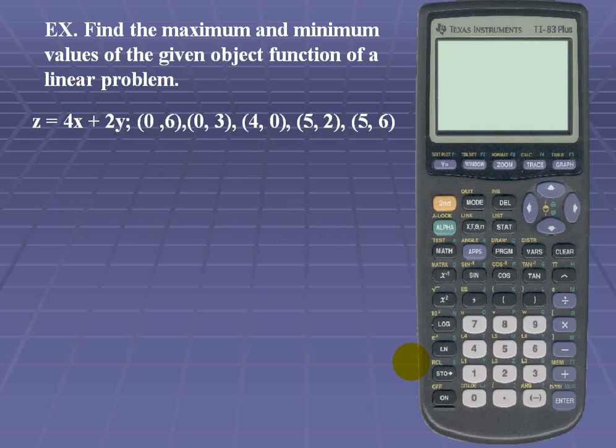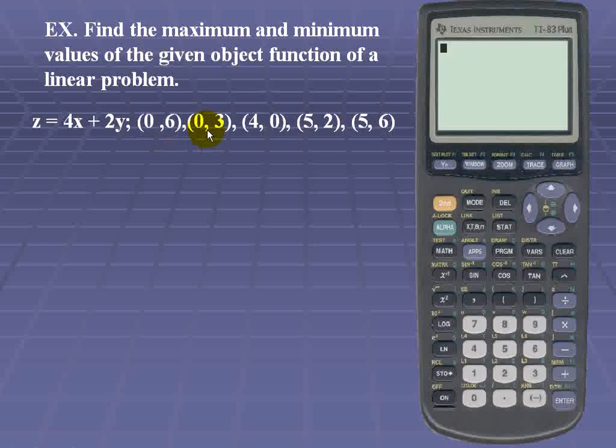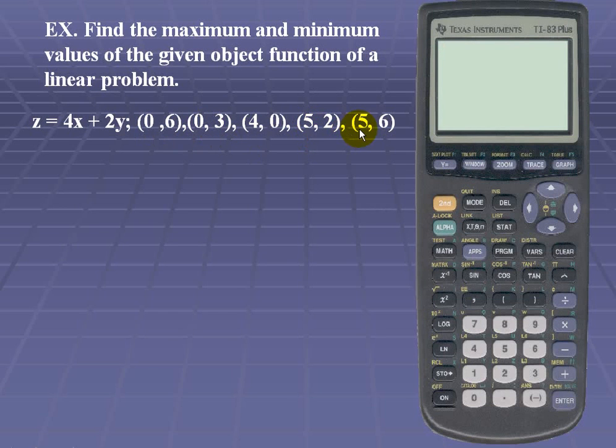We're given the function z is equal to 4x plus 2y, and we're given the coordinates (0,6), (0,3), (4,0), (5,2), and (5,6).